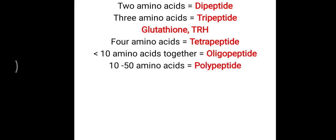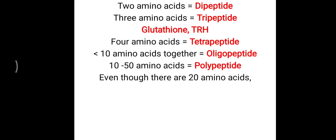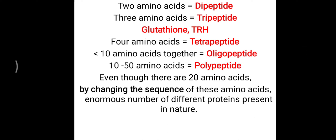Ten to fifty amino acids form a polypeptide chain. Even though there are only 20 amino acids in our body, a large number of different proteins are made — and that is based on the particular sequence. By changing the sequence of these amino acids, a large number of different kinds of proteins can be produced inside our body as well as in nature.